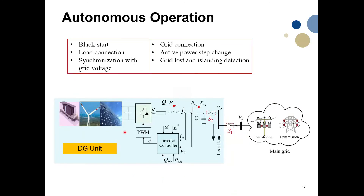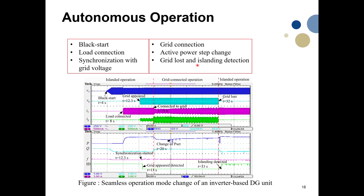We tested the autonomous operation of the system. The setup uses a programmable DC voltage source that can emulate any renewable energy source. We tested different operations: black start, load connection, synchronization, grid connection, voltage change, and power change — covering all aspects of seamless operation.